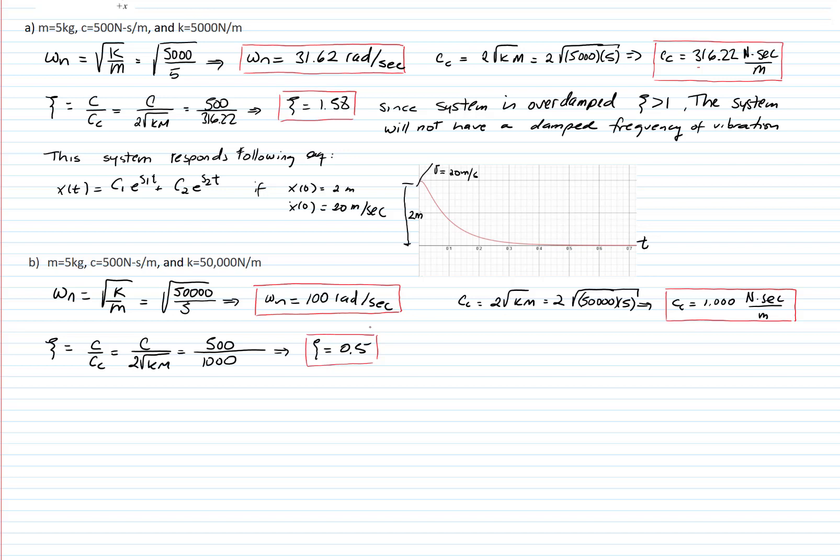Therefore, we are in an underdamped system. Now we calculate the damped frequency of vibration, and that equals omega n square root of 1 minus zeta squared, 86.60 radians over second.